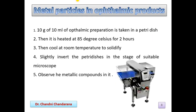For metal particles in ophthalmic products, take 10 grams or 10 ml of the ophthalmic preparation in a petri dish, heat it at 85 degrees centigrade for 2 hours, cool it to room temperature until it solidifies, then slightly invert the petri dish on the stage of a suitable microscope and observe the metallic particles in it.